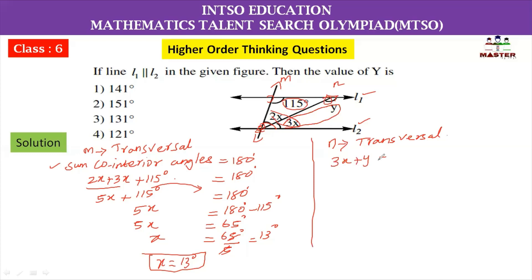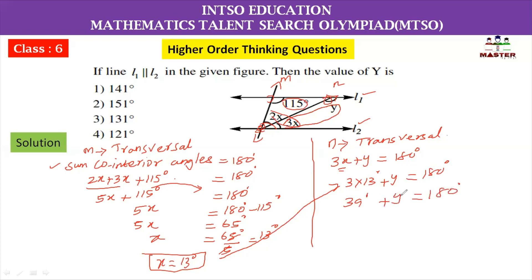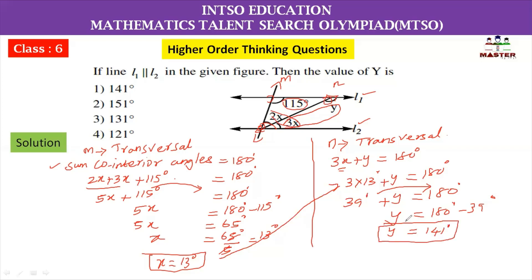So 3X and Y is equal to 180 degrees. We know the value of X is 13 degrees, so substituting: 3 times 13 degrees plus Y equals 180 degrees. That gives 39 degrees plus Y equals 180 degrees. Therefore Y is equal to 180 minus 39 degrees, which is 141 degrees. So option 1, 141 degrees, is the correct answer.